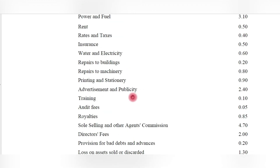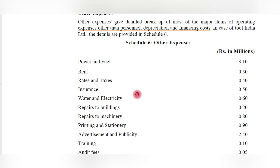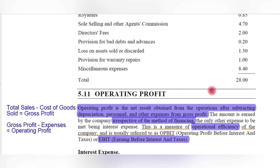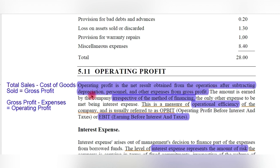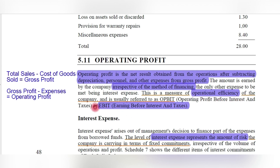These expenses incurred in the daily running of the business are also shown in the profit and loss account under the head 'other expenses.' Now, what is operating profit? From the gross profit, all these expenses are reduced to arrive at operating profit. Operating profit is the net result obtained from operations after subtracting depreciation, personal-related, and other expenses from gross profit. It is earned by the company irrespective of the method of financing — whether debt capital or equity capital — and is a measure of operational efficiency.